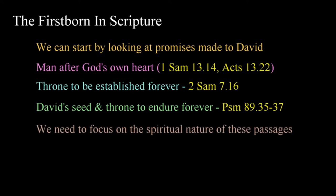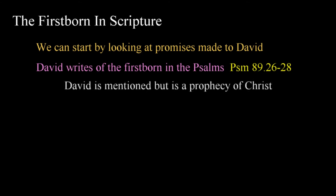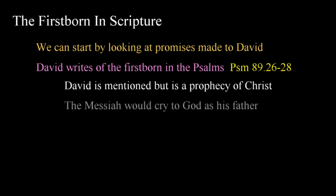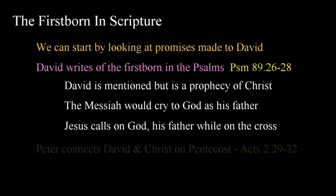While these passages are sometimes used to teach the restoration of the physical kingdom of Israel, we need to focus on the spiritual aspects of what's being stated. Earlier in Psalm 89, we read, He shall cry unto me, Thou art my Father, my God, and the rock of my salvation. Also, I will make him my firstborn, higher than the kings of the earth. My mercy will I keep for him forevermore, and my covenant shall stand fast with him, in Psalm 89:26-28. Although David is mentioned in this passage, we find that it's actually a prophecy of Christ. The attributes contained here indicate the Messiah would cry to God as his Father, as Christ did during his earthly ministry and on the cross. On the day of Pentecost, Peter speaks of the fulfillment of this promise to David.